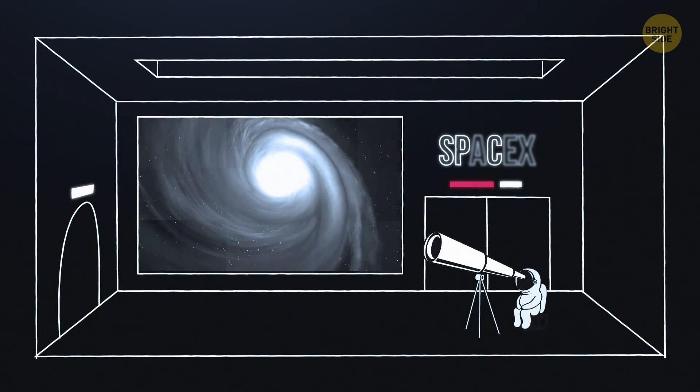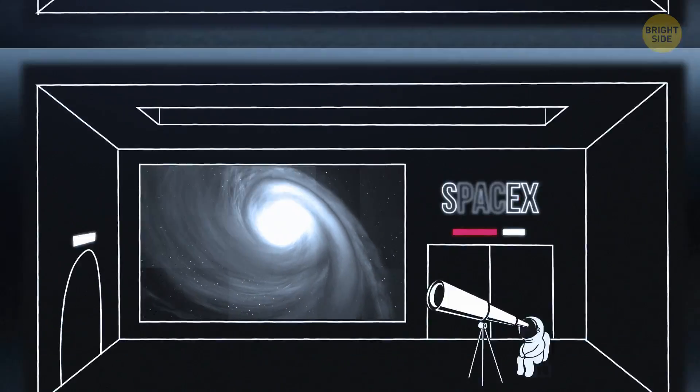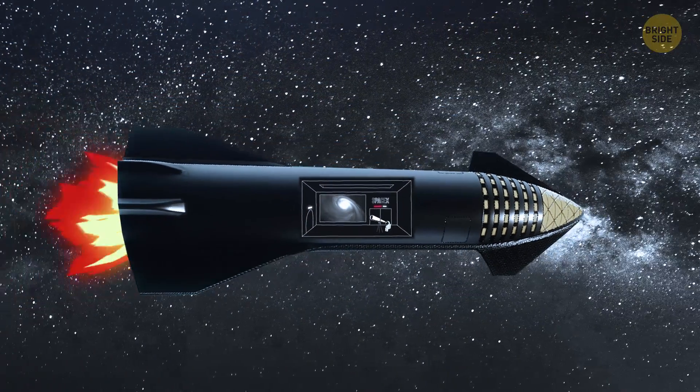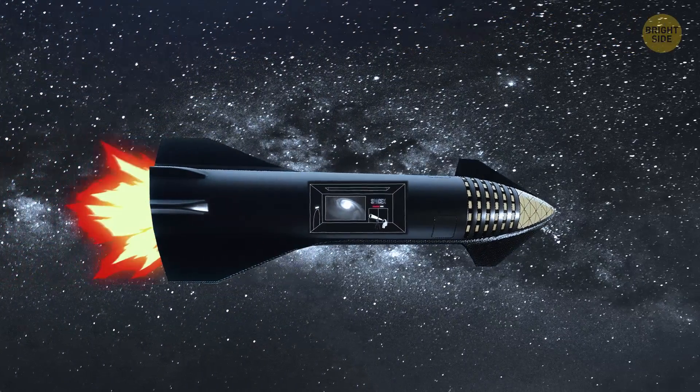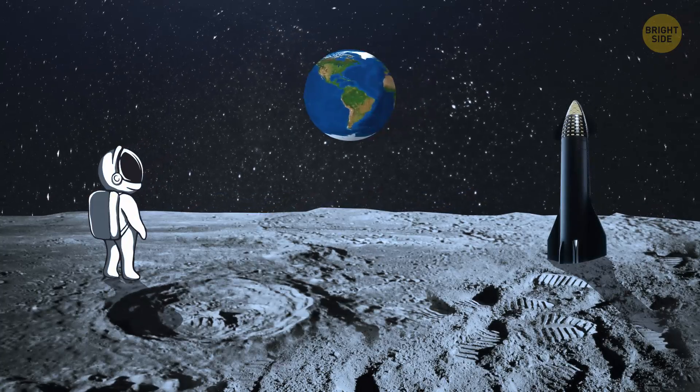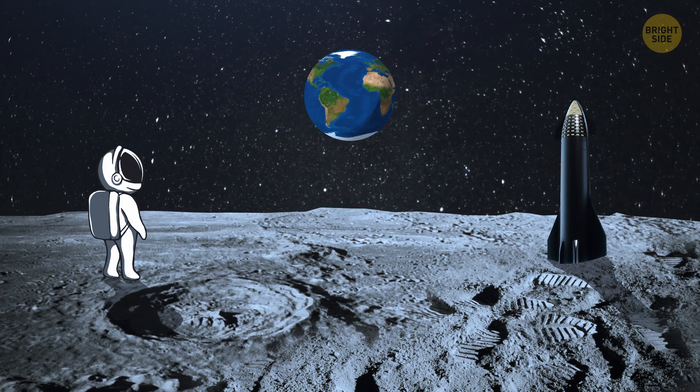Can two planets really collide? There are around 100 billion stars in the Milky Way, and an equal number of planets. Lots of those planets probably have moons. So, there must be billions of worlds in our galaxy alone.